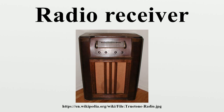The information produced by the receiver may be in the form of sound, images, or data. A radio receiver may be a separate piece of electronic equipment or an electronic circuit within another device. Devices that contain radio receivers include television sets, radar equipment, two-way radios, cell phones, and wireless computer networks.